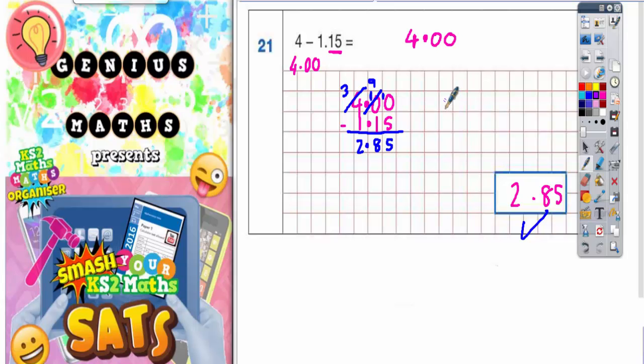So 4.00 you could call 3.99 and 1.15 you could call 1.14. And if you make both of them 0.01 less it would actually give you the same answer.